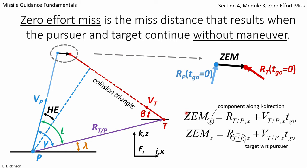Let's focus on the x component for a moment. The first term, target with respect to pursuer range vector, x component, so that would be the horizontal component of this purple vector here.